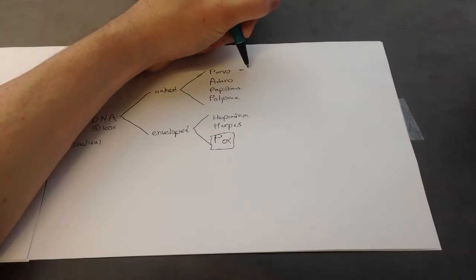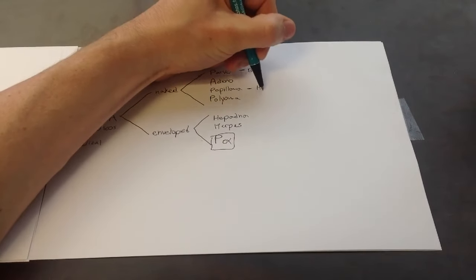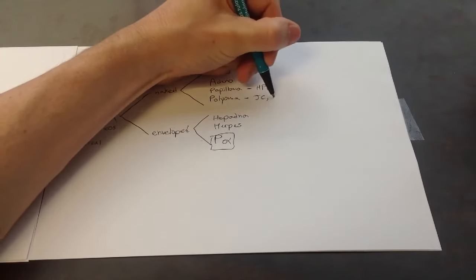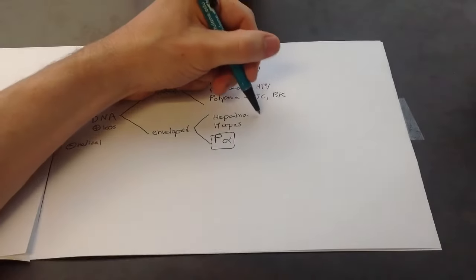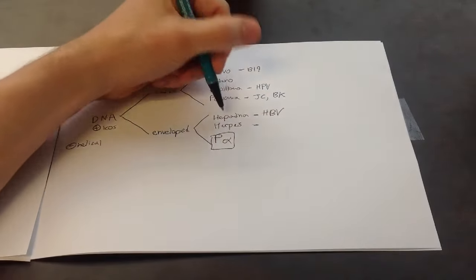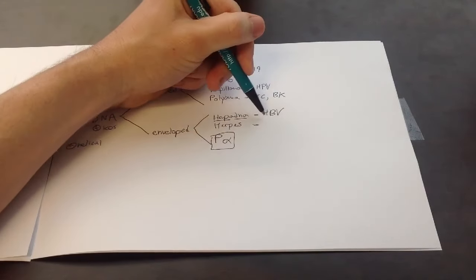Parvo only has B19. Adenovirus only has adenovirus. Papillomavirus are your HPVs. Polyomavirus has both JC and BK. Hepadnovirus has HBV. And the nice thing about that is it's hepatitis. DNA virus, HBV.